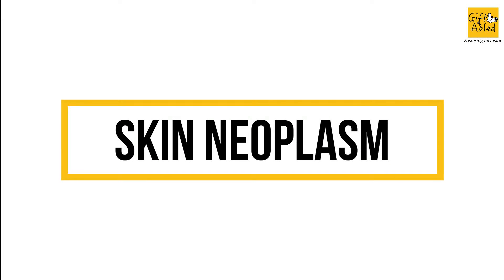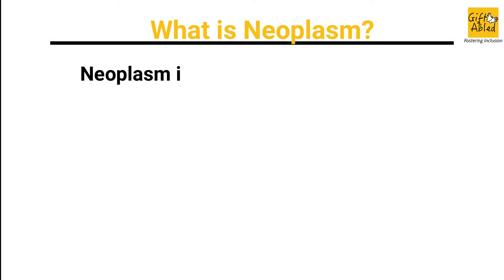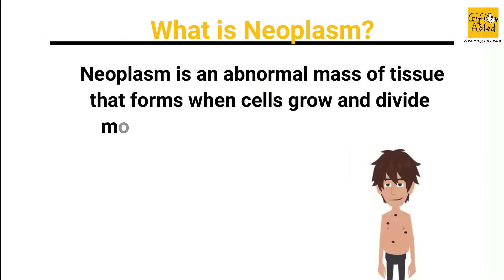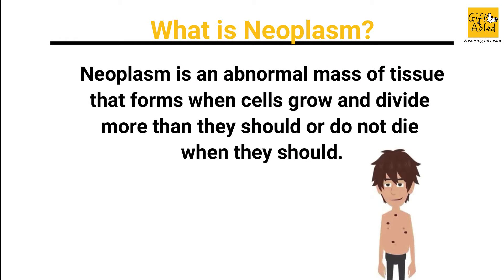Skin Neoplasm. What is Neoplasm? Neoplasm is an abnormal mass of tissue that forms when cells grow and divide more than they should or do not die when they should.